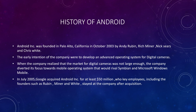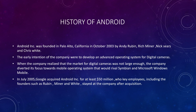Android was founded in Palo Alto, California, on October 2003 by Andy Rubin, Rich Miner, Nick Sears, and Chris White. The early intention of the company was to develop an advanced operating system for digital cameras. Later they realized the market for digital cameras was not large enough, so the company decided to pivot to a mobile operating system.